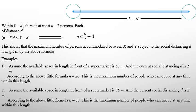Here are two simple numerical examples. If the queue in front of a supermarket is 50 meters, then through this calculation you get 26 people. And if it is 75 meters, you get 38 people.